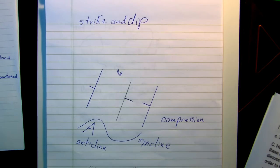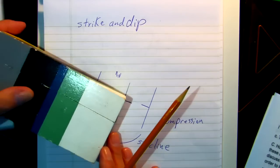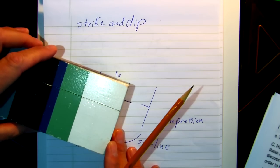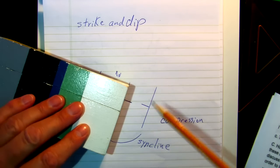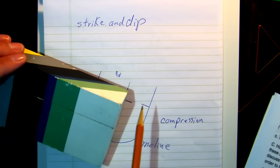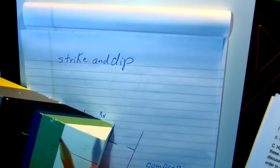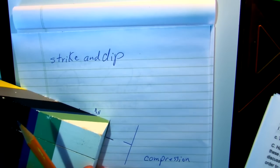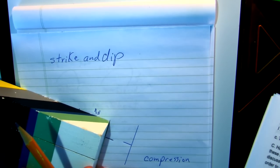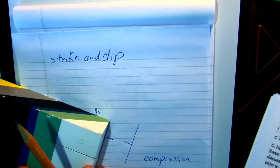If I take this block here, you can see how the layers are coming up out of the earth. And I place it against my horizontal plane, the notebook being the horizontal plane. Now, can you see that this intersection between the horizontal plane and the layers is a straight line? This straight line is my strike.